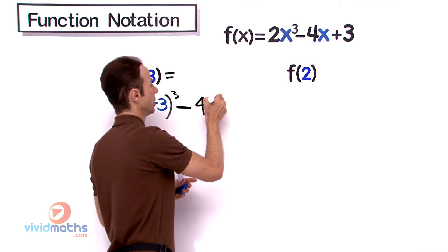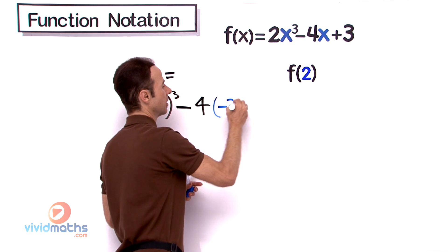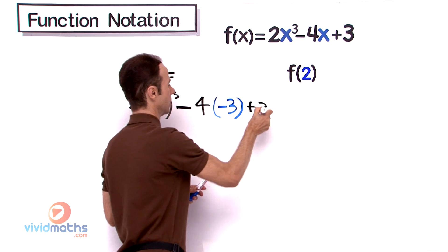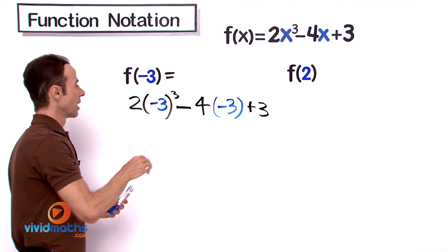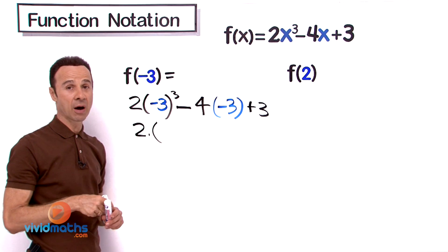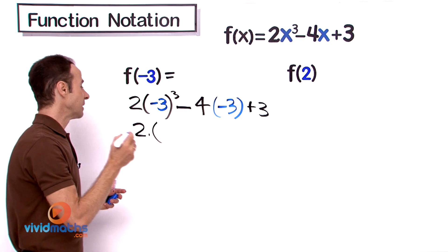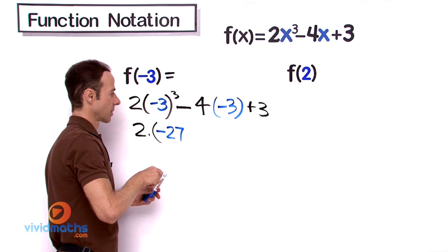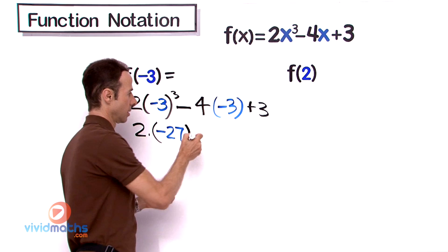So that's 2(-3)³ - 4(-3) + 3. Let's process this. That will become 2 times negative 3 to the power of 3, which gives us a negative value, negative 27, minus, well negative times negative is positive, so that is going to be plus 12.